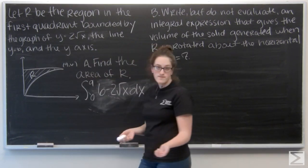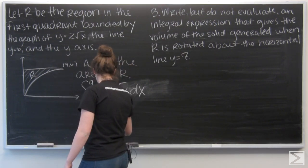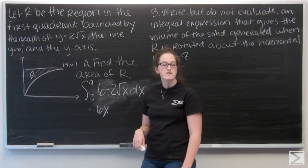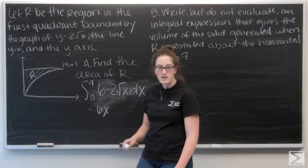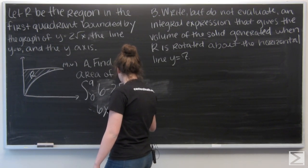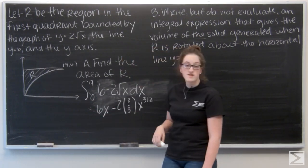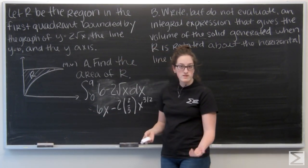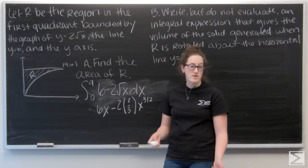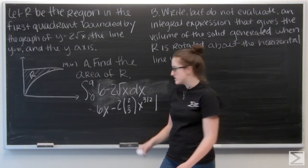I have 6 minus 2 square root of x. Now, let's go ahead and integrate. When I integrate 6, I'm going to get 6x. And for 2 square roots of x, I can think about that as 2 times x to the 1 half. So when I integrate, I'm going to get 2 times 2 thirds times x to the 3 half. I add 1 to my exponent. 1 half plus 1 is 3 halves. And then I want to divide by that, so I flip my fraction. And now I want to evaluate that from x equals 0 to x equals 9.